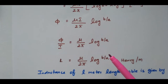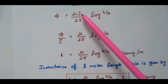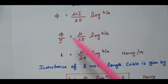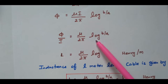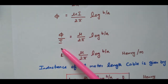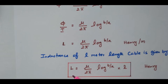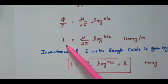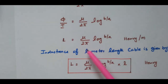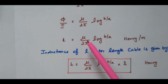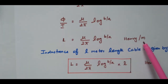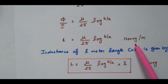Our aim is to find the inductance, so we bring I to the denominator. φ divided by I equals μ divided by 2π times log(b/a). Since φ/I is the inductance L (with N equals 1), the inductance L equals μ divided by 2π times log(b/a). The unit is Henry per meter because we considered 1 meter length of cable.